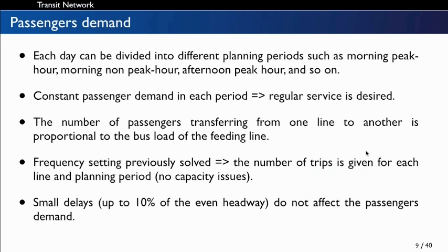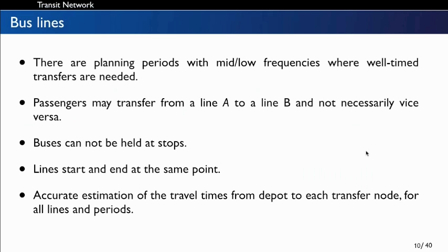We also have no capacity issues. Perhaps the most important demand assumption is that small delays do not affect the passenger's choice. Regarding bus lines, we suppose there are planning periods with mid and low frequencies where well-timed passenger transfers are needed. Even when passengers may transfer from line A to line B, they do not necessarily transfer in the other direction — so we have oriented passenger transfers.